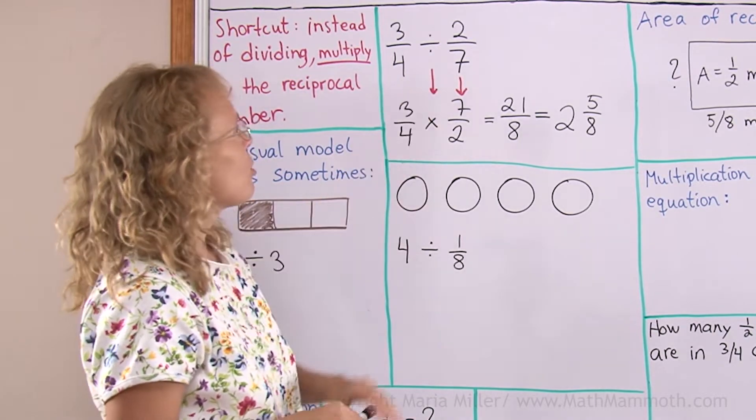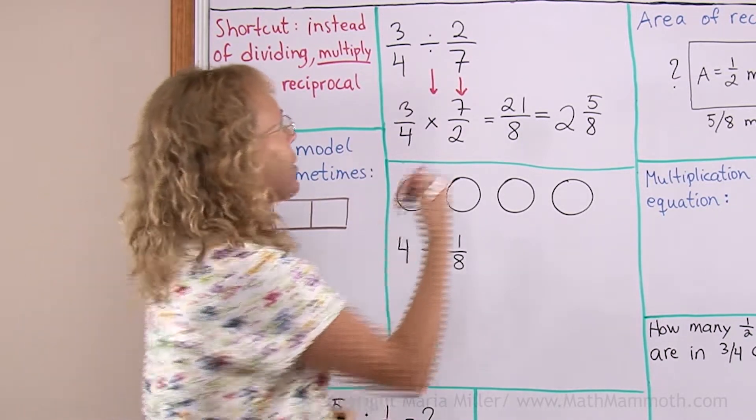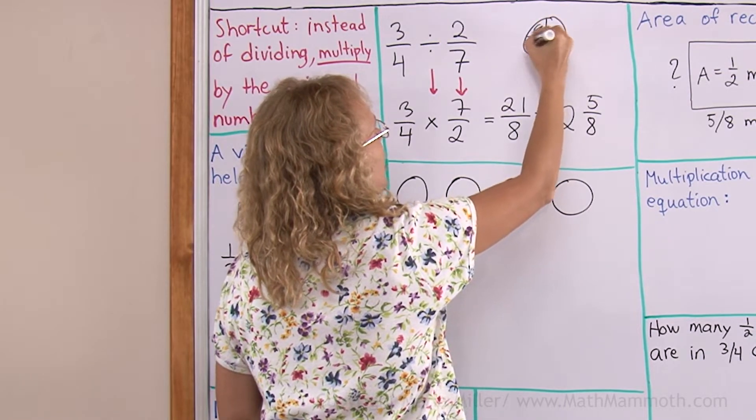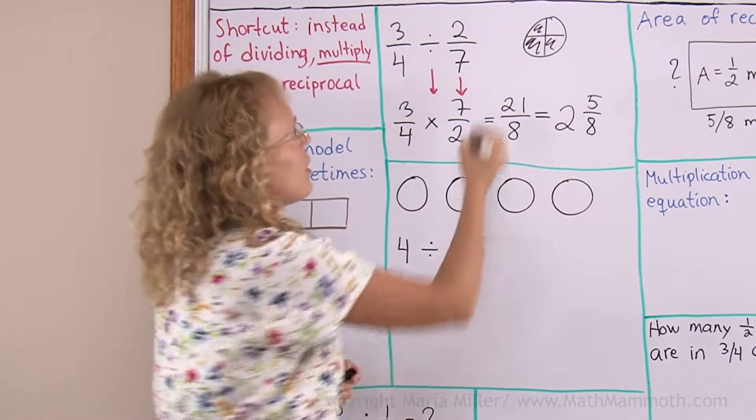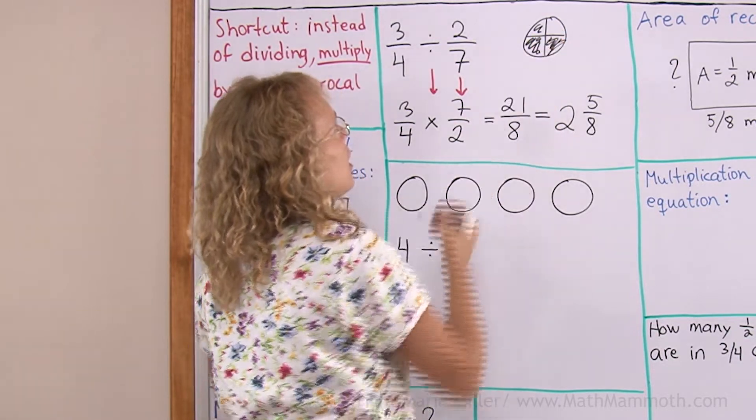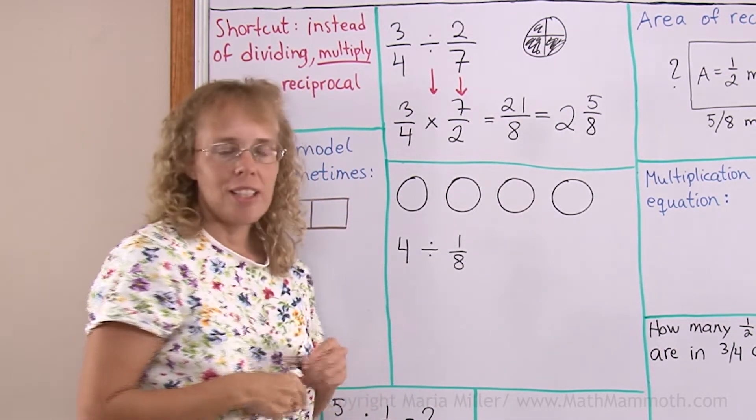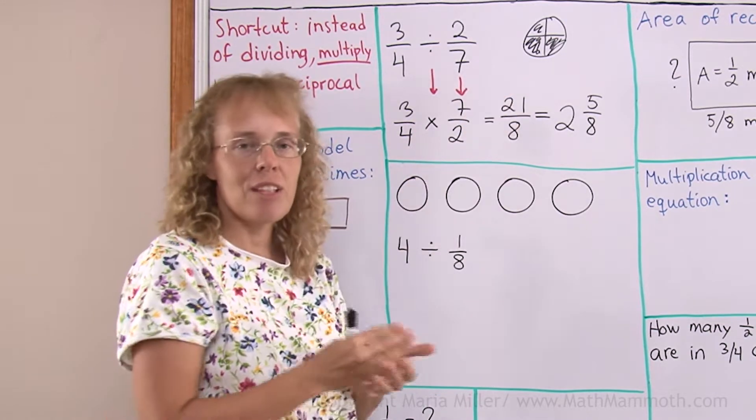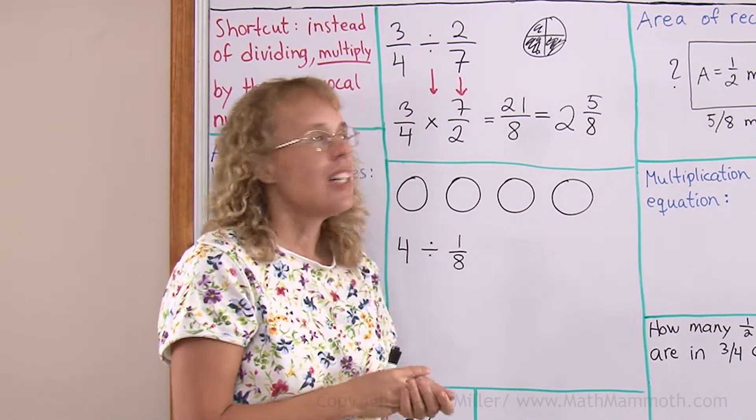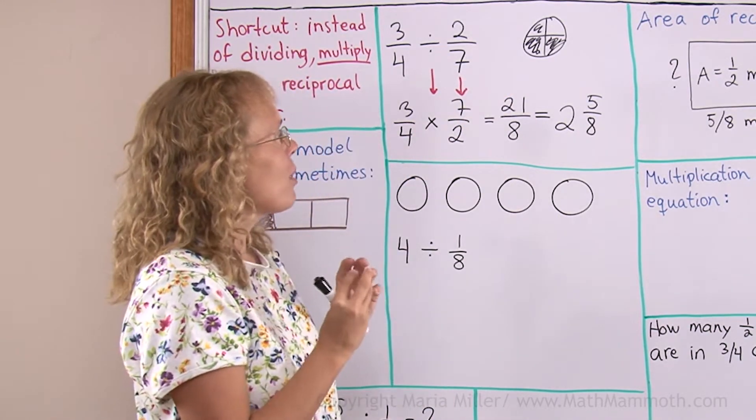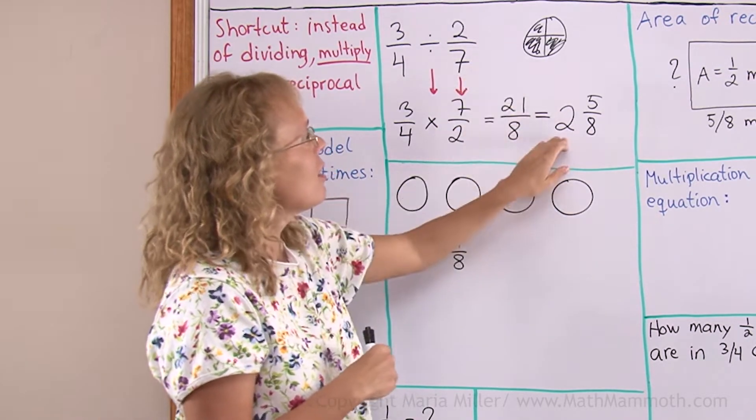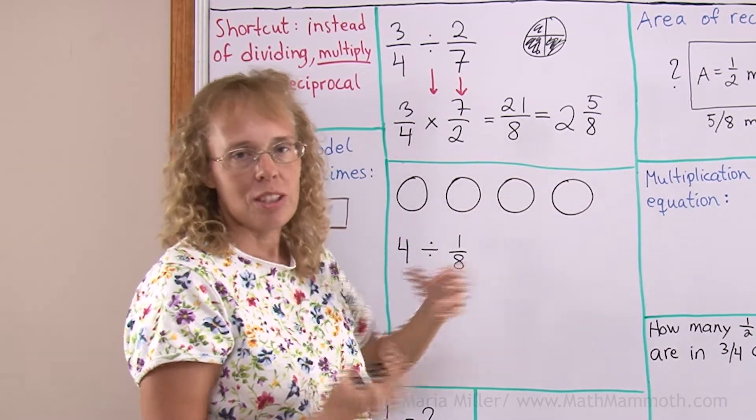You know, 3/4 divided by 2/7, you can think of it this way. If you have 3/4, like a pie—3/4 of it is colored—and how many times would 2/7 fit into that? 2/7 is much less. 2/7 of a pie, those two slices that are sevenths, would fit into there over 2 and a half times. So it does make sense.